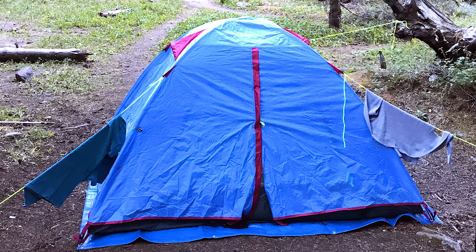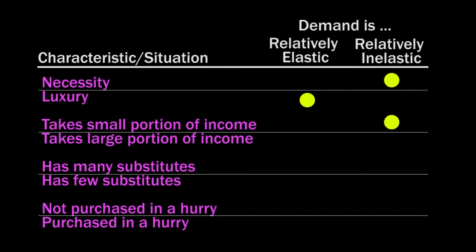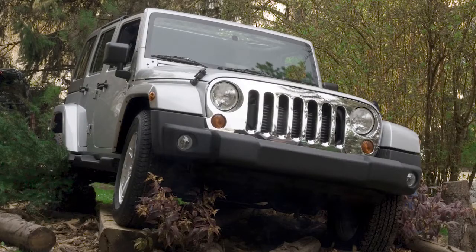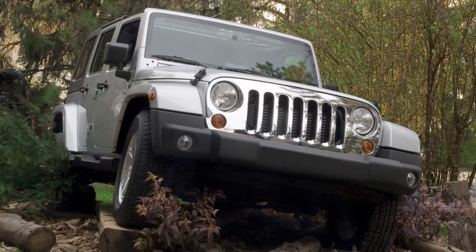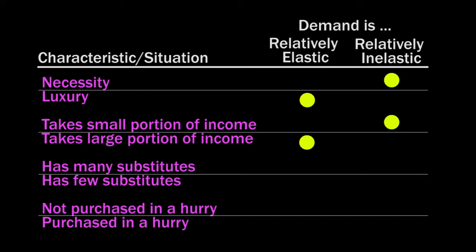Goods that take a small portion of your income, such as campsites, have relatively inelastic demand because a price change for something that inexpensive doesn't matter much to you. Goods that take a large portion of your income, such as jeeps, have relatively elastic demand.